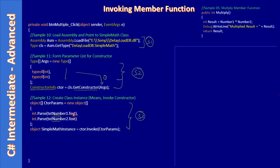We are populating the object array by reading the text box content from the form instance, then calling constructor.Invoke with those parameters. When you invoke a constructor, what you get back is an instance of the object — that's why the return type here is object. We name this SimpleMathInstance. This is equivalent to doing SimpleMath obj = new SimpleMath(...) — the object is ready.